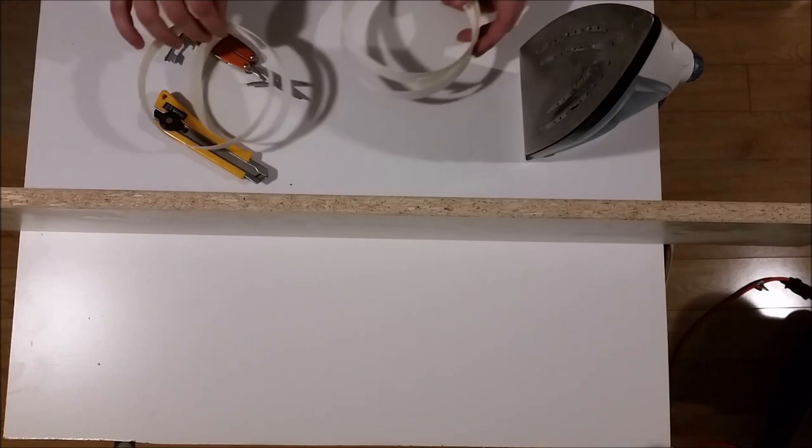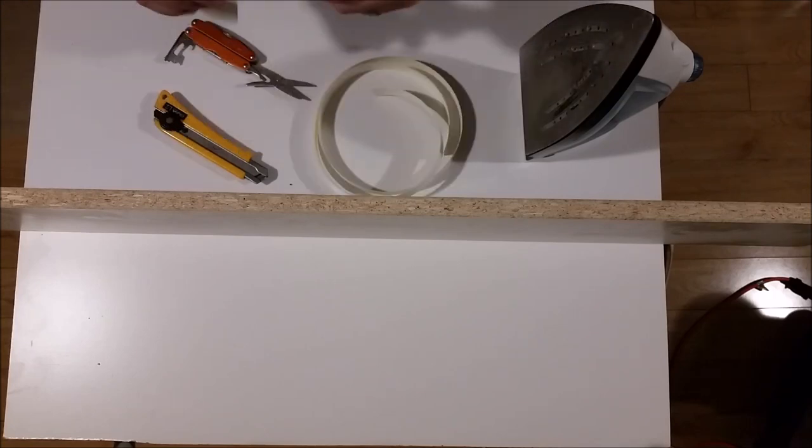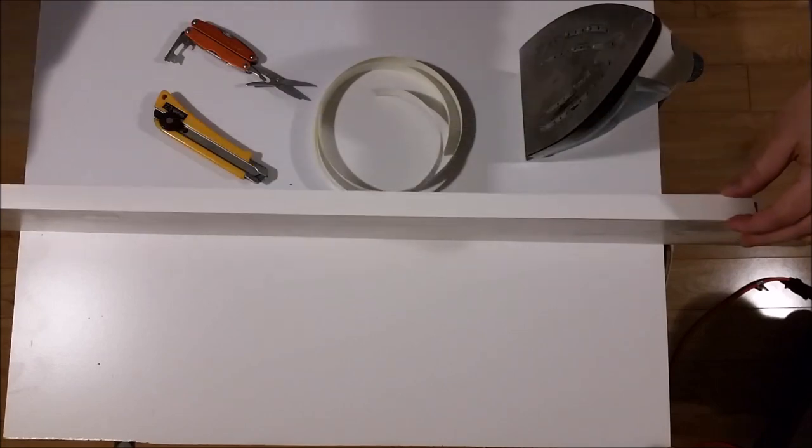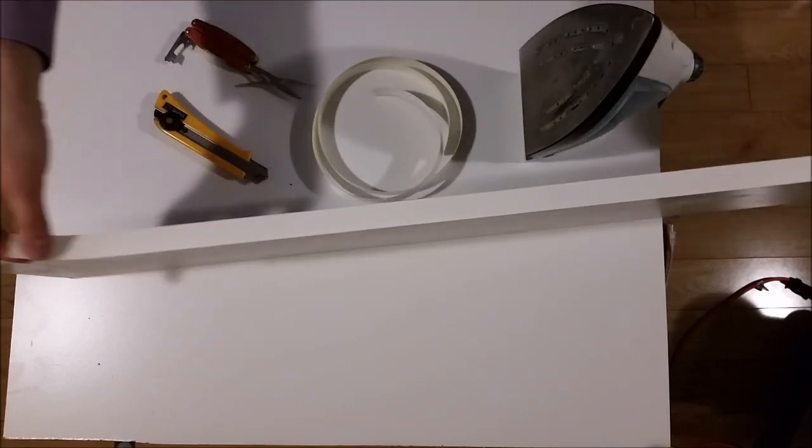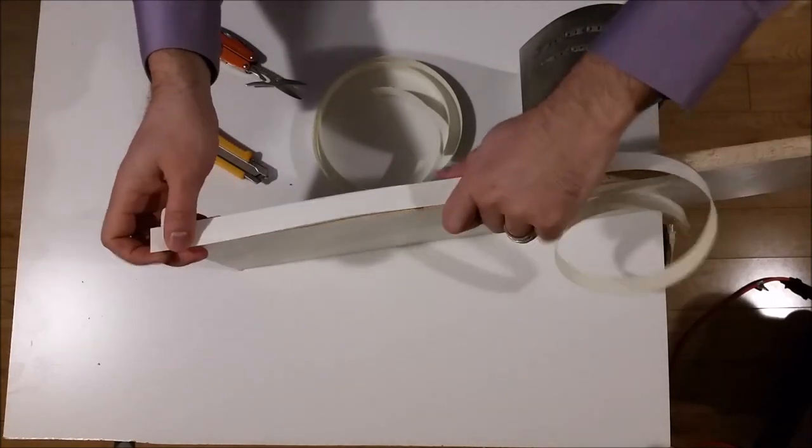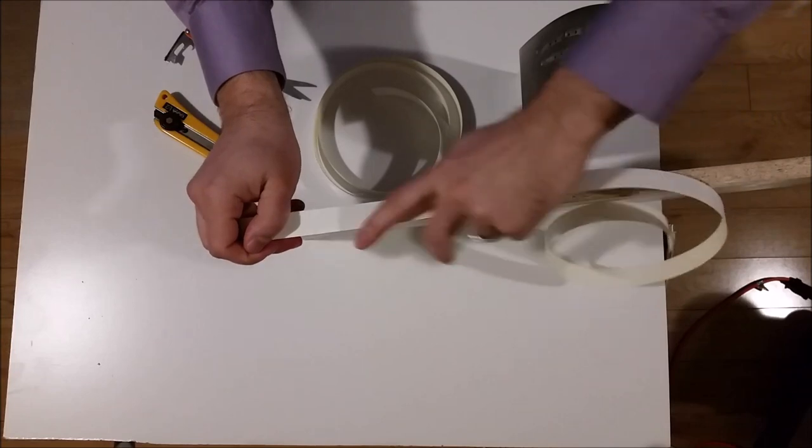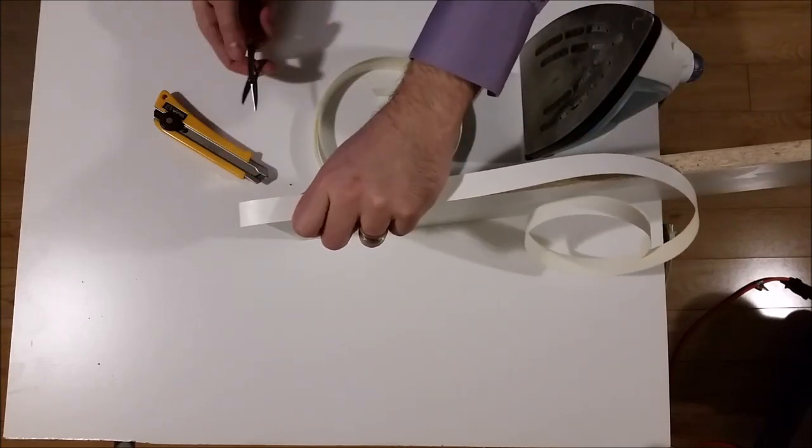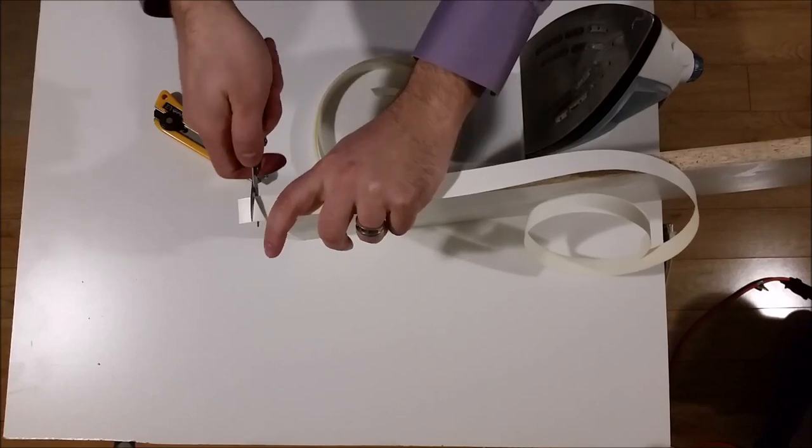So the first step is to measure out your edge. You're going to put it on the edge, unravel it, and try to hold it here. Once you get to the edge, when you have it covering end to end, you just snip the excess.